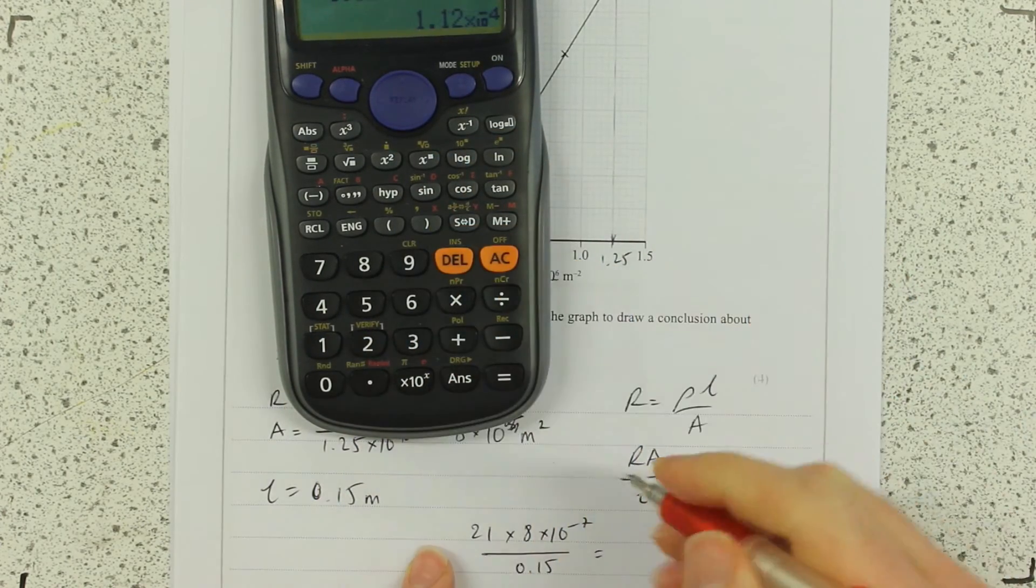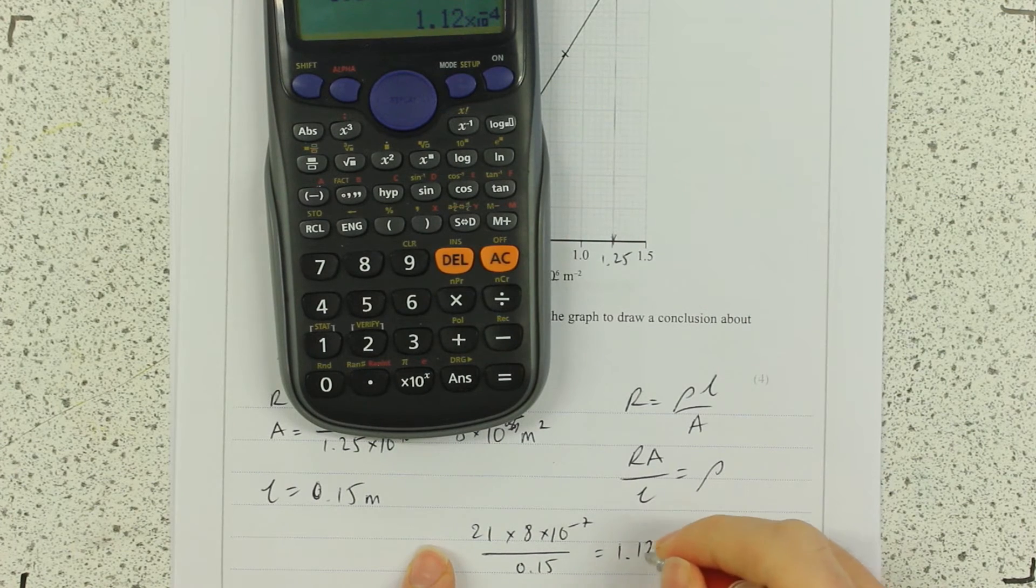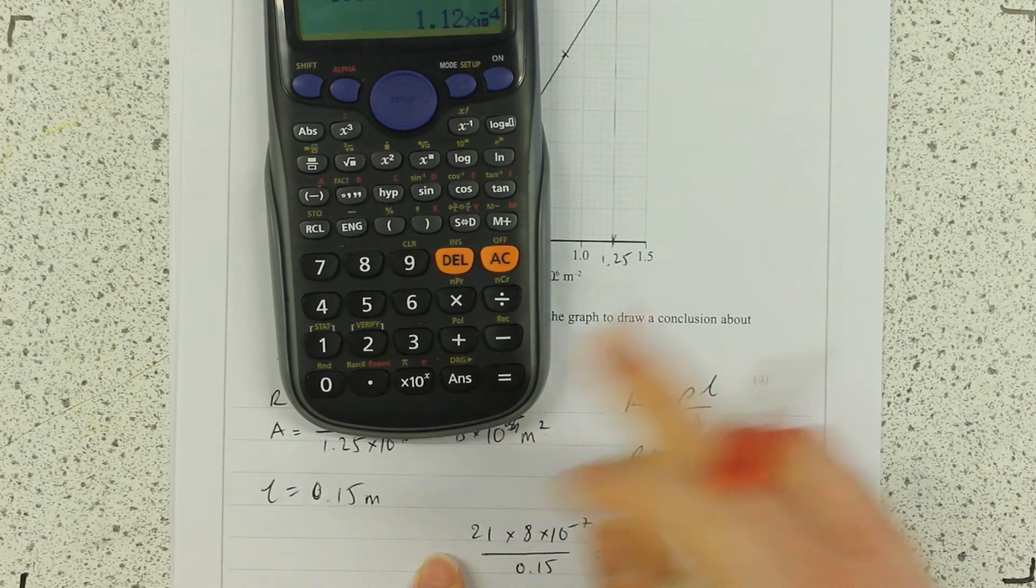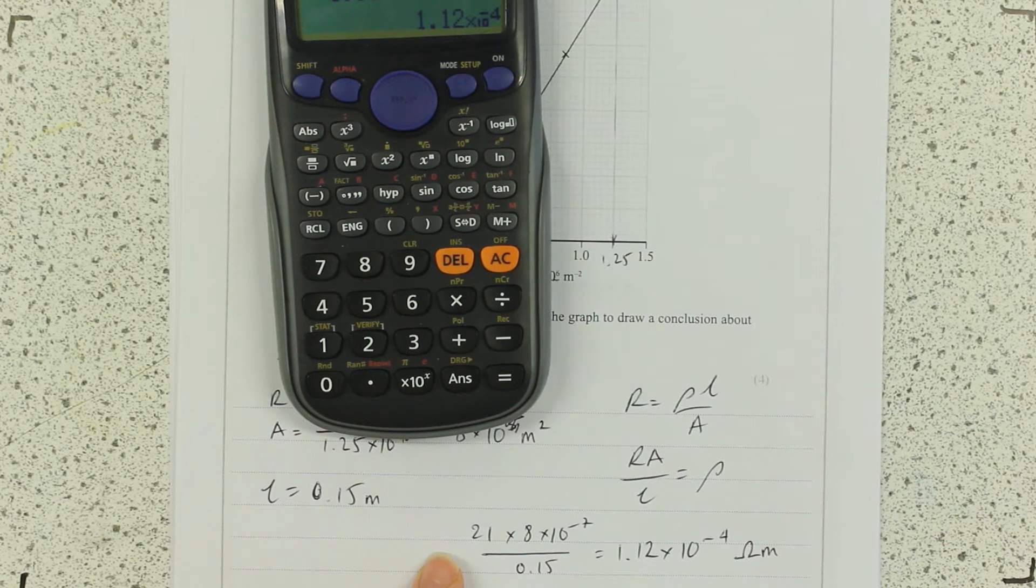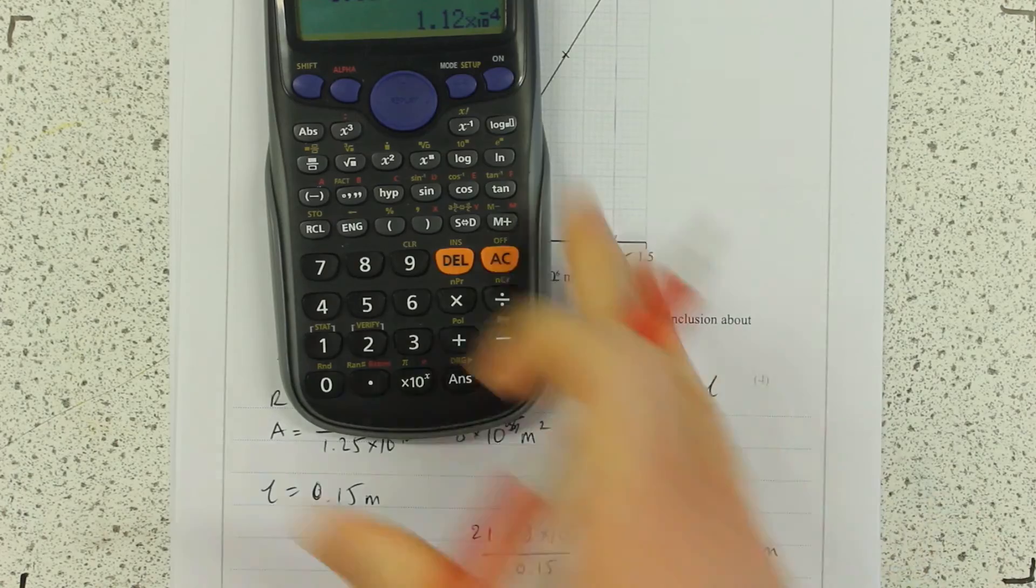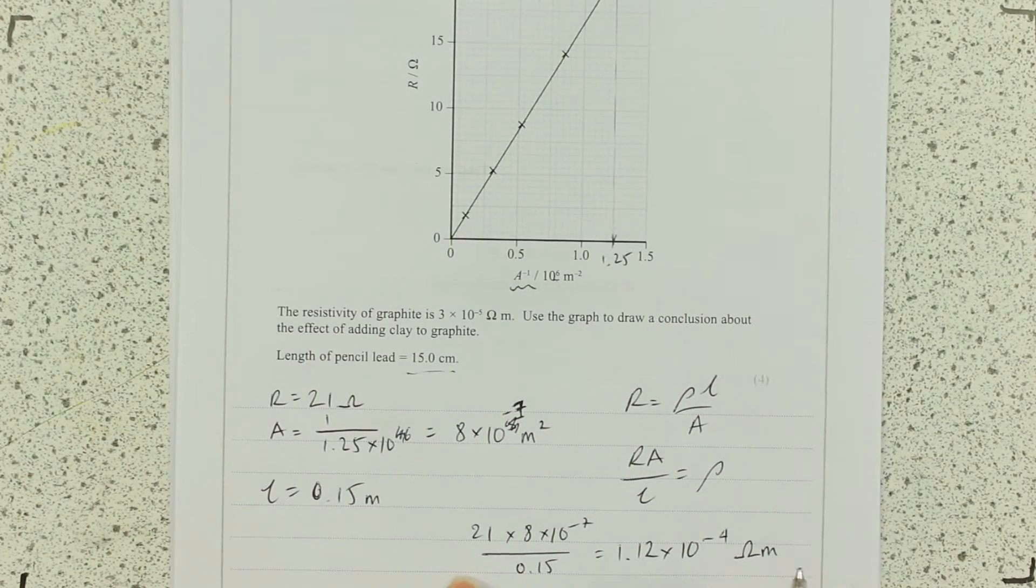There we go. 1.12 times 10 to the minus 4. It's resistivity. So it's ohm meters. It's the unit of that. That's fine. Now, isn't there something else I need to do for a fourth mark? Draw a conclusion.